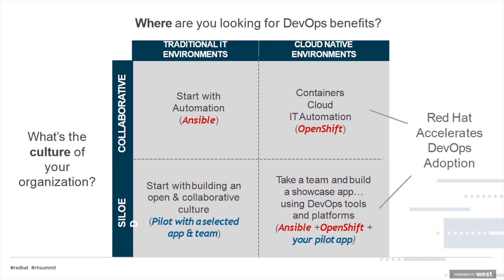Before, we looked at where you're looking to get your DevOps benefits. If we overlay something we talked about earlier, there's a certain set of tools that can help with traditional IT and collaboration — Ansible, containers and cloud IT automation, and OpenShift — and then bringing those all together to take a team and build a showcase app using DevOps principles, tools, and platforms to support it. That's where we see a lot of our customers getting success out of using OpenShift and Ansible for these solutions.